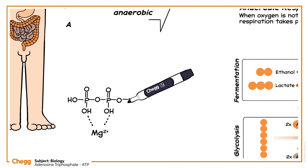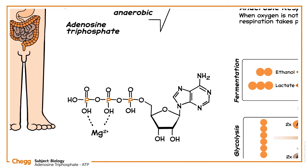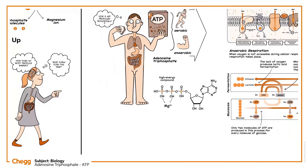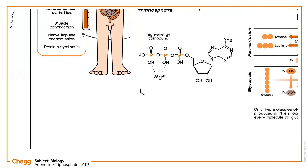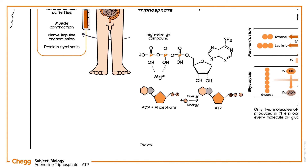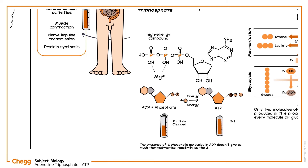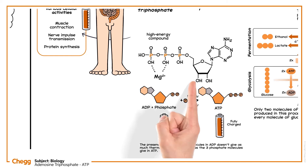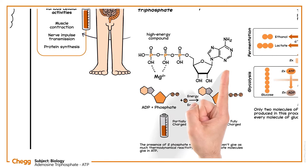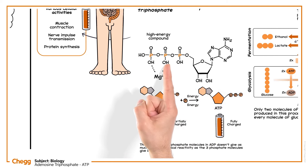Structurally, ATP, adenosine triphosphate, has three phosphate molecules, which make it a high-energy compound. The breakdown of ATP into ADP and inorganic phosphate releases a lot of energy, which can be used for various cellular activities. This high-energy compound is stabilized during a catalytic process via magnesium ions, which balance out the electrostatic tension between the negatively charged phosphate groups. The presence of two phosphate molecules in ADP doesn't give as much thermodynamic reactivity as the three phosphate molecules in ATP. The image here indicates the ATP structure having an adenosine base on the right and three phosphate groups on the left.